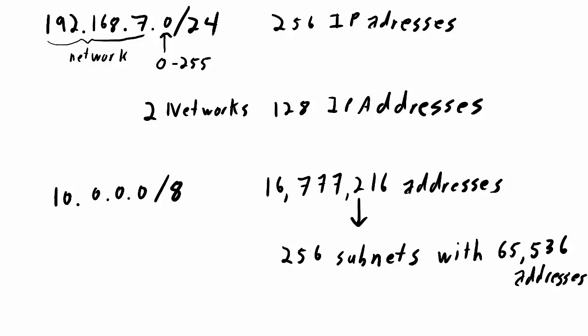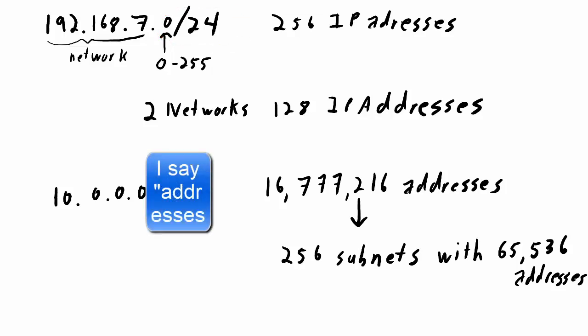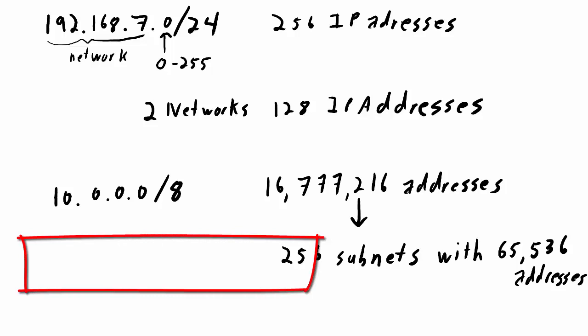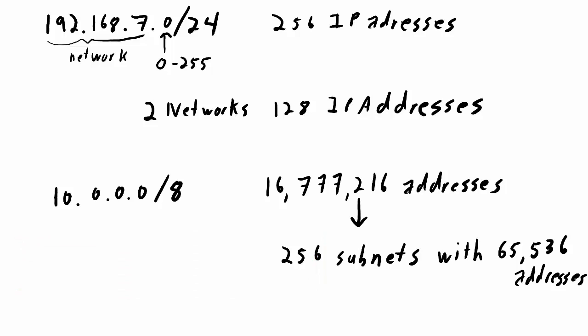Each time you cut the network in half, you're losing two more IP addresses that can't be assigned to devices. The actual process of subnetting involves adjusting the subnet mask. I've written the subnet mask as /24 and /8 — that slash notation means the number of ones before the first zero in the subnet mask. Adding a one to the subnet mask doubles the number of networks but halves the number of IP addresses in each network.